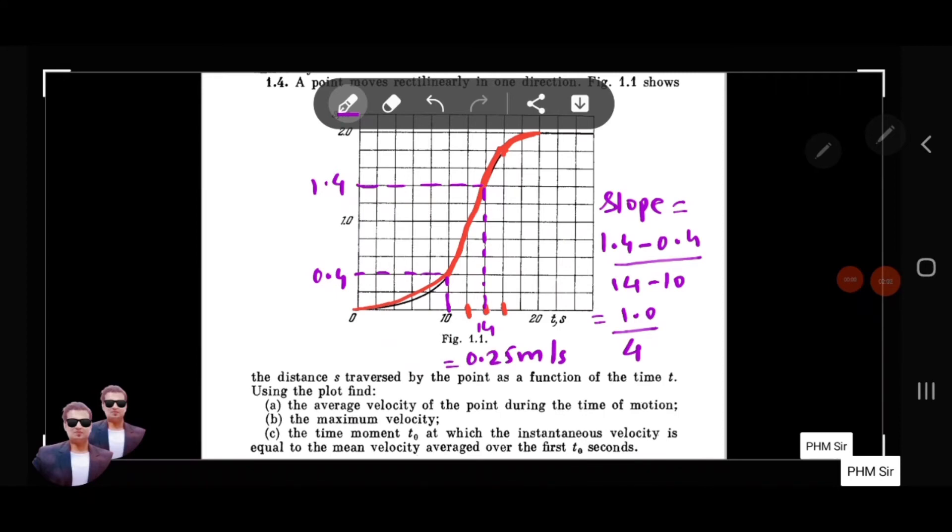So this is the maximum velocity. You can see the average velocity is 0.1 meter per second, and the maximum velocity is 0.25 meter per second. So this is the maximum velocity. Now the third question is the most interesting part.